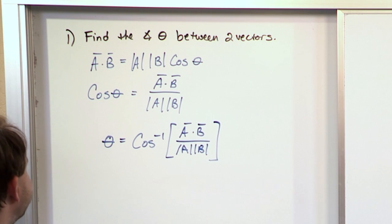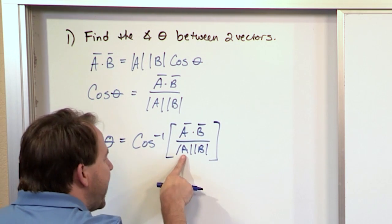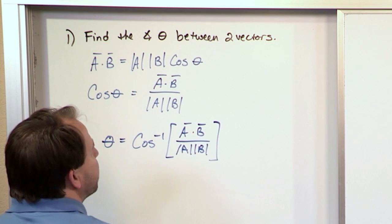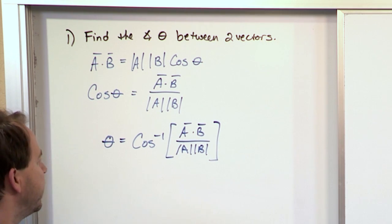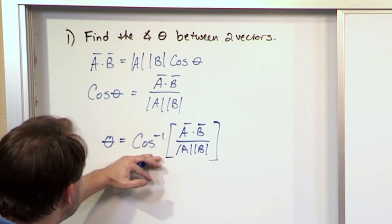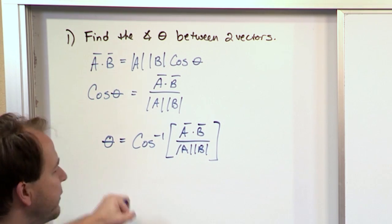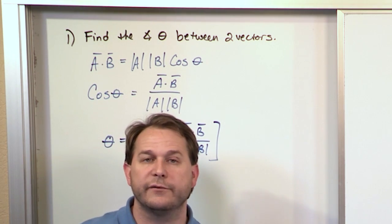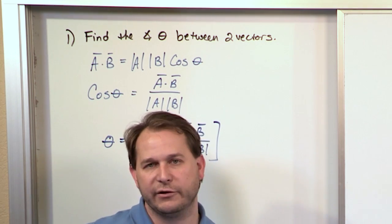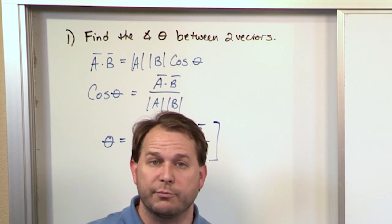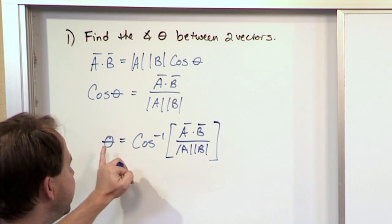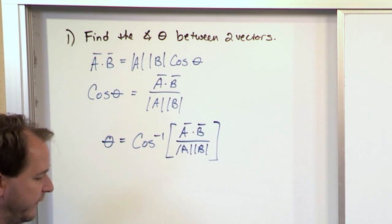Basically, if you have two vectors and you know their magnitudes — which you can calculate — and you can figure out the dot product, then you do this division and take the inverse cosine, and you'll get back a number in degrees or radians, whichever mode you're in, representing the angle between the two vectors. That's very useful, depending on what information you're given in the problem.